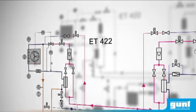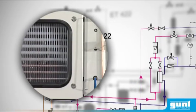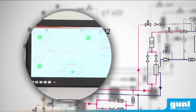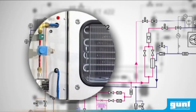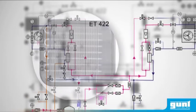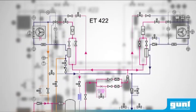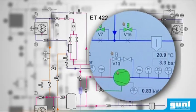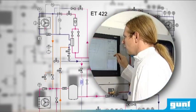ET422 represents the latest generation of Gunt refrigeration systems. In order to obtain a highly practical orientation, the system is equipped with commonly used components of industrial application. The system is fully controlled by the touch screen of the computer.